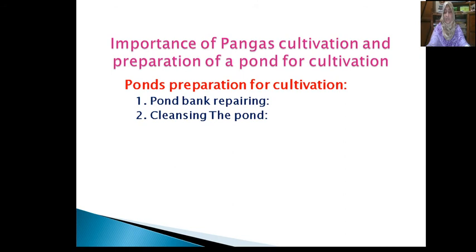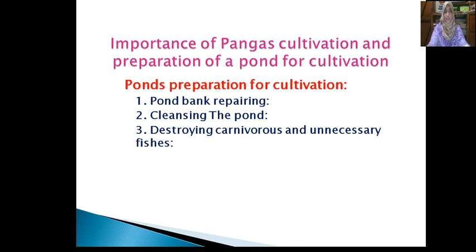Thus, harmful gases and germs are removed. Destroying carnivorous and unnecessary fishes: No carnivorous and unnecessary fishes will be kept in the pond. This can be done by drying the pond through irrigation or by pulling a dense gill net. If the pond cannot be dried, 30 to 35 grams of rotenone, a fish poison, is used per decimal for a depth of 30 cm water level, and carnivorous fishes would be killed. The water of the pond cannot be used for 7 to 10 days after using rotenone. The fishes killed by rotenone can be eaten.